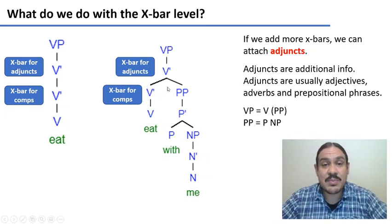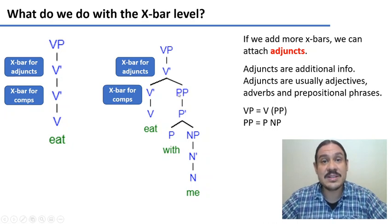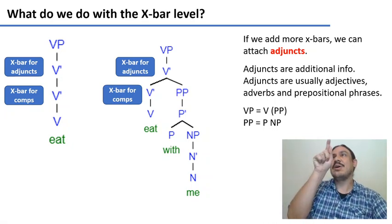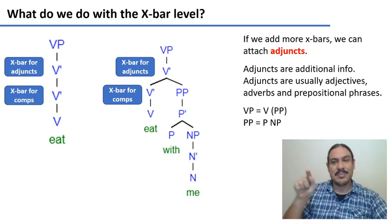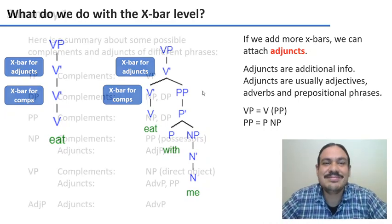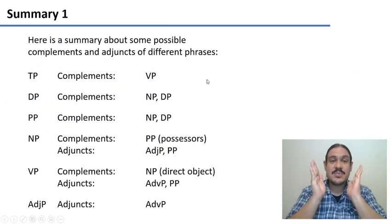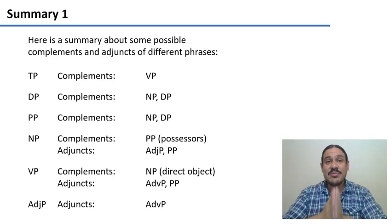Verbs can take prepositional phrases as adjuncts. They can also take adverbial phrases — like if you had 'eat now,' that would be an adjunct for an adverb. Here's a summary of possible combinations of complements and adjuncts with the phrases we have so far.